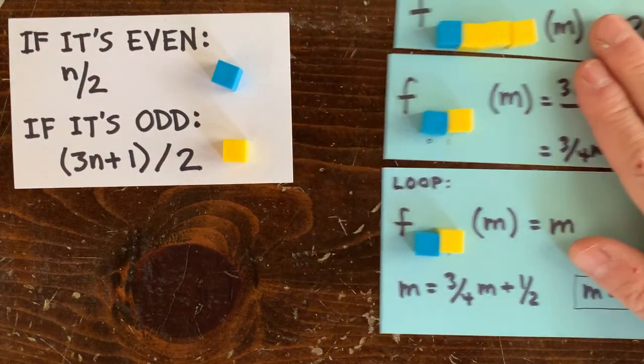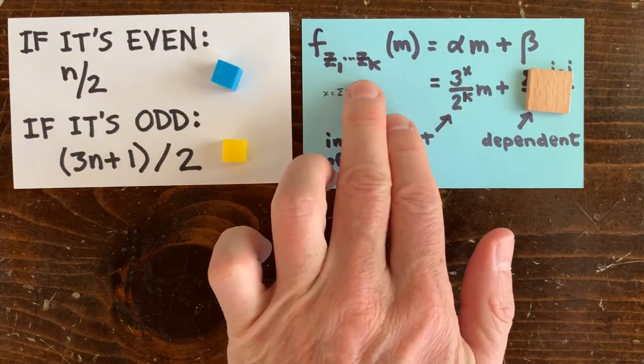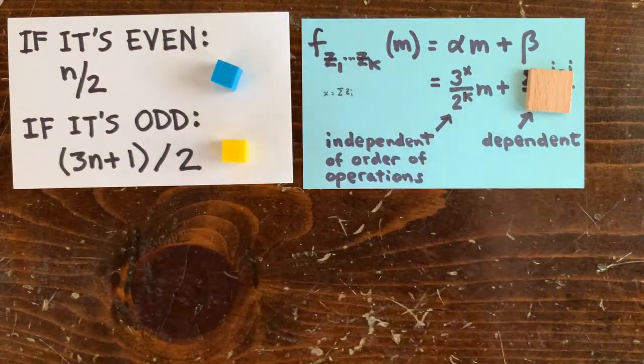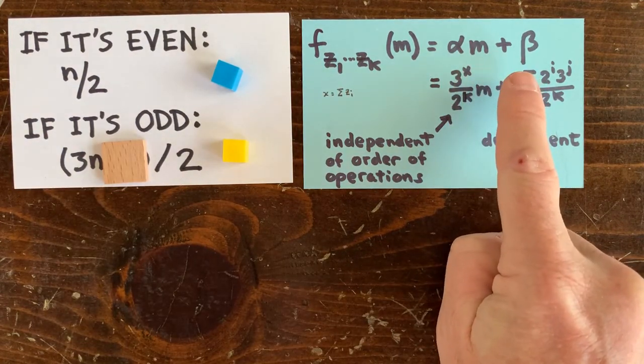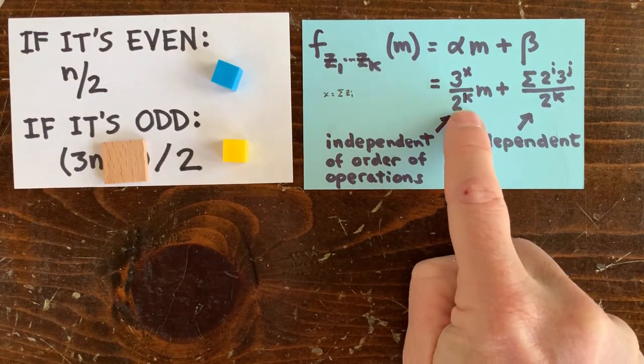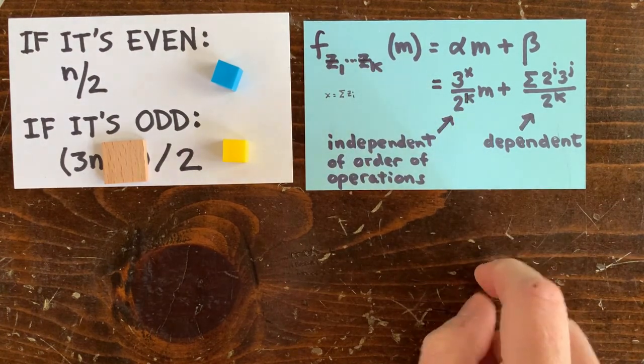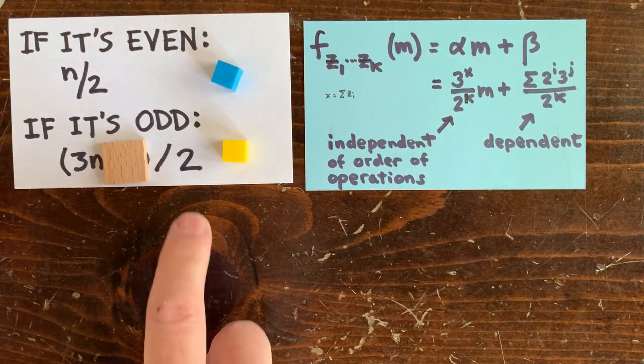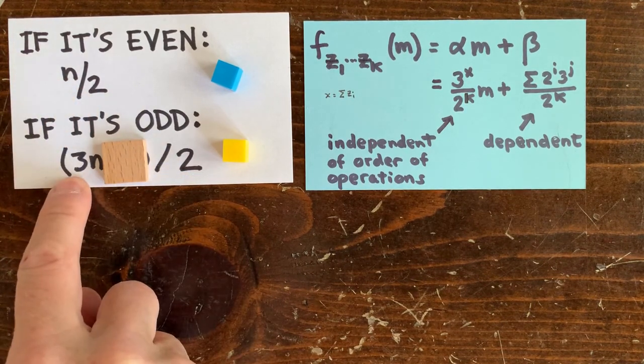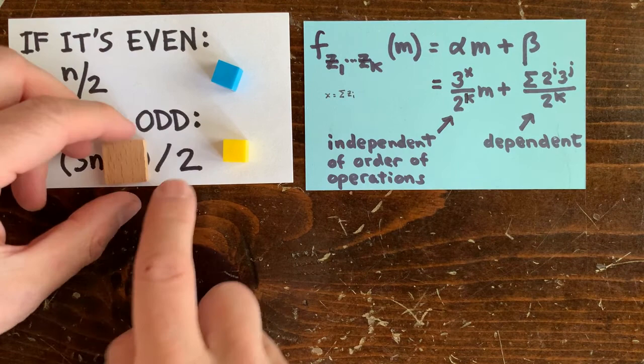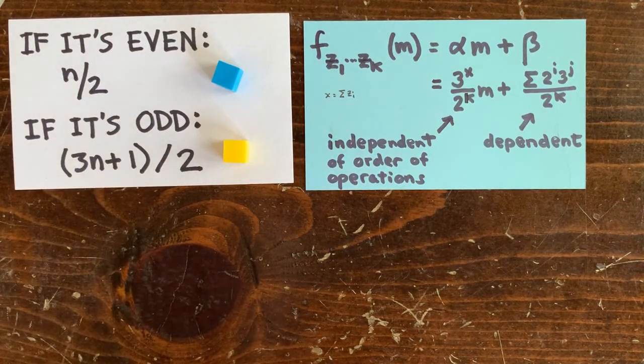But what about the general case where the operation sequence is z1 through zk? Well, we know the form of this function is going to be alpha m plus beta after we simplify it down. And it turns out that alpha is 3 to the x over 2 to the k, which makes total sense. Because if we start with m, k operations are going to cut it in half, and x of those operations are going to multiply it by 3. And this alpha is independent of the order of those k operations.